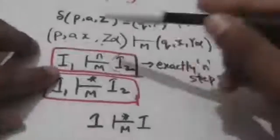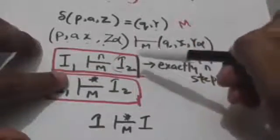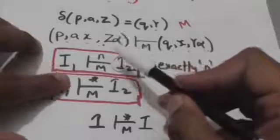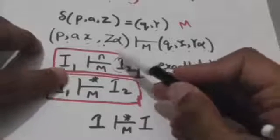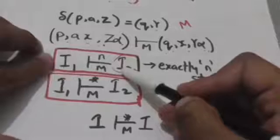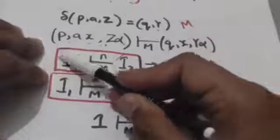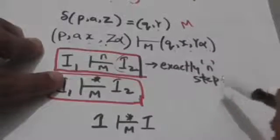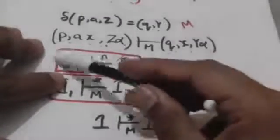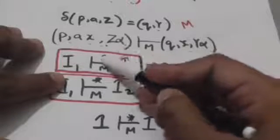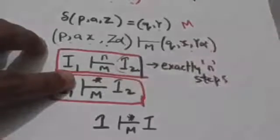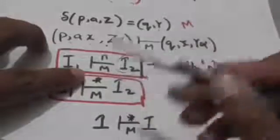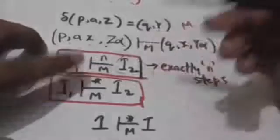Suppose i1 and i2 are two instantaneous descriptions. The pushdown automata M reaches the configuration described by i2 from the configuration described by i1 in exactly N number of moves. Then these two instantaneous descriptions can be related by a symbol where N indicates the number of moves required to reach this configuration from that configuration, and M describes that we are talking about pushdown automata M. If that is obvious, M can be removed.